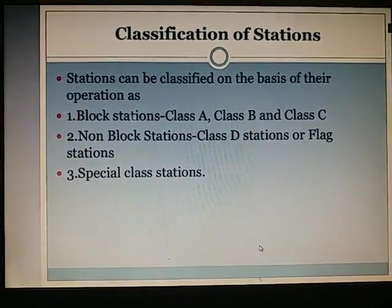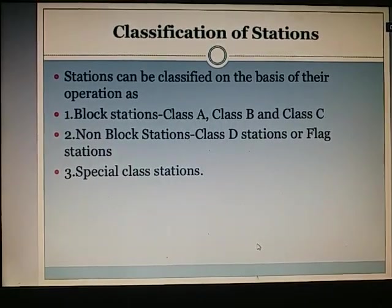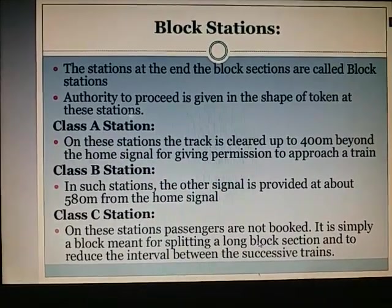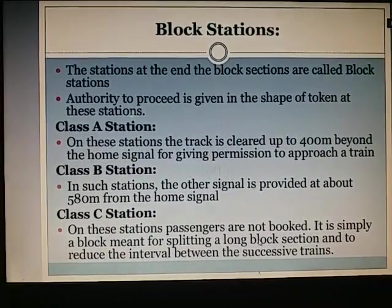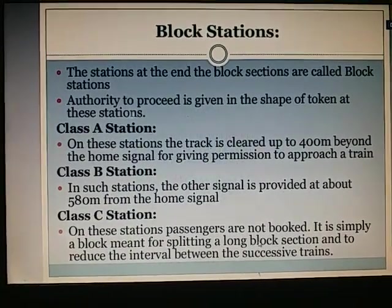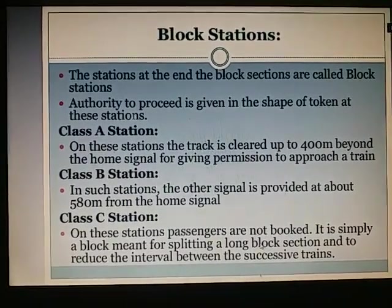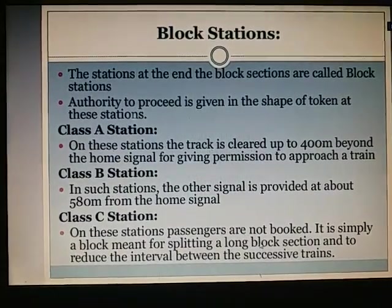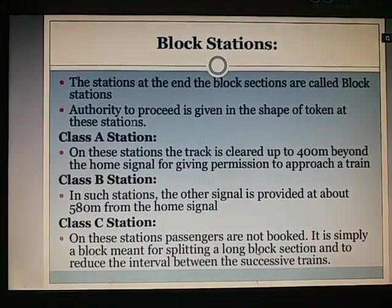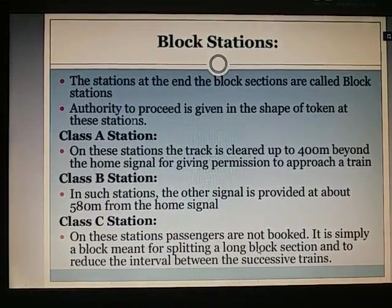Classification of stations on the basis of operation: First are block stations — Class A, B, and C. Non-block stations are Class D or flag stations. Special class stations also exist. The stations at the end of block sections are known as block stations, where authority to proceed is given in the shape of a token. Class A stations: the track is cleared up to 400 meters beyond the home signal. Class B stations: an outer signal is provided at about 550 meters from the home signal. Class C stations: passengers are not booked; it is simply a block for splitting a long block section and reducing the interval between successive trains.